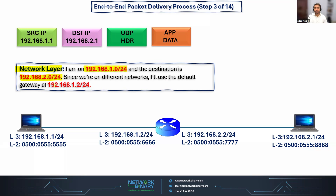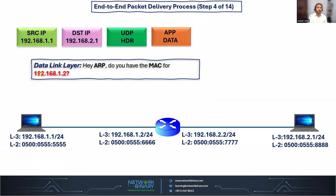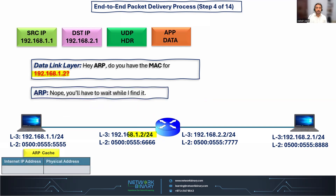We already covered the AND operation process in a previous video. With the help of the AND operation, it has found the destination network is on a different network. In this case, the sender says: I have to contact the gateway IP address first to send this data. The network layer contacts the data link layer, which contacts the Address Resolution Protocol and asks: do you have the MAC address of this gateway IP address? ARP says: hold on, let me check my ARP cache table. Since this is the first communication, the ARP cache table is completely empty. ARP says: I don't have the MAC address — you have to wait while I resolve it.